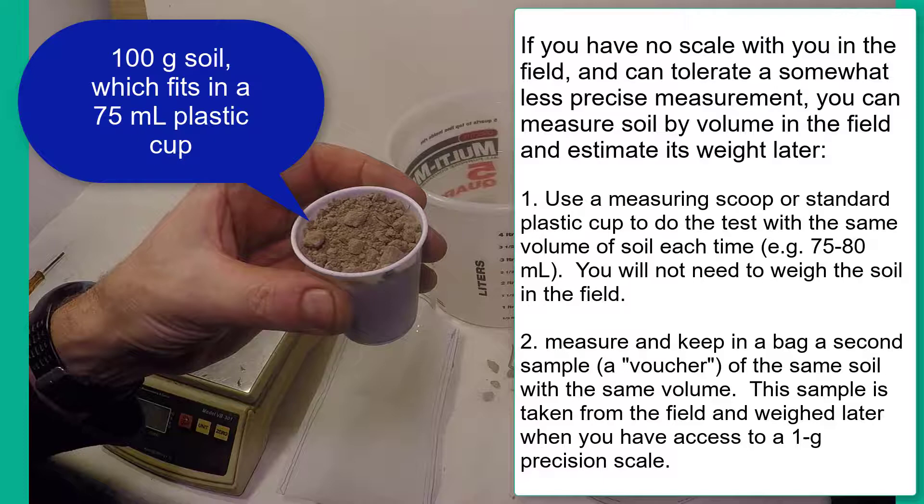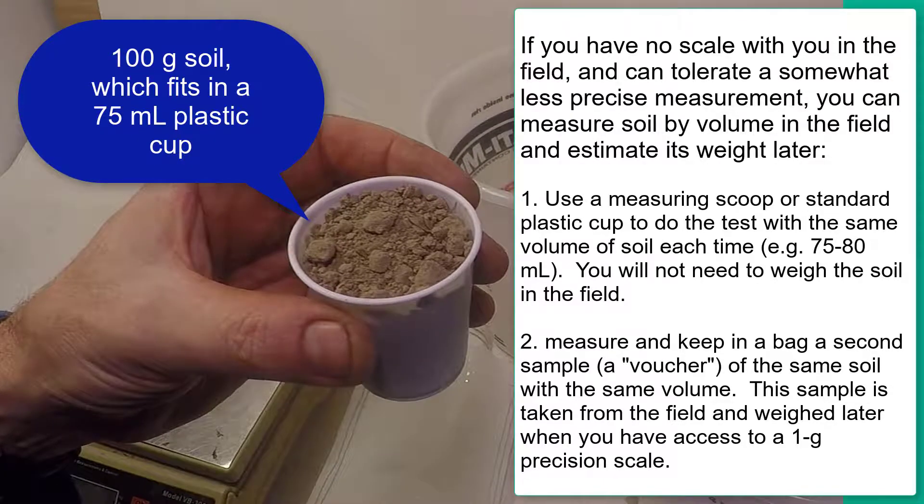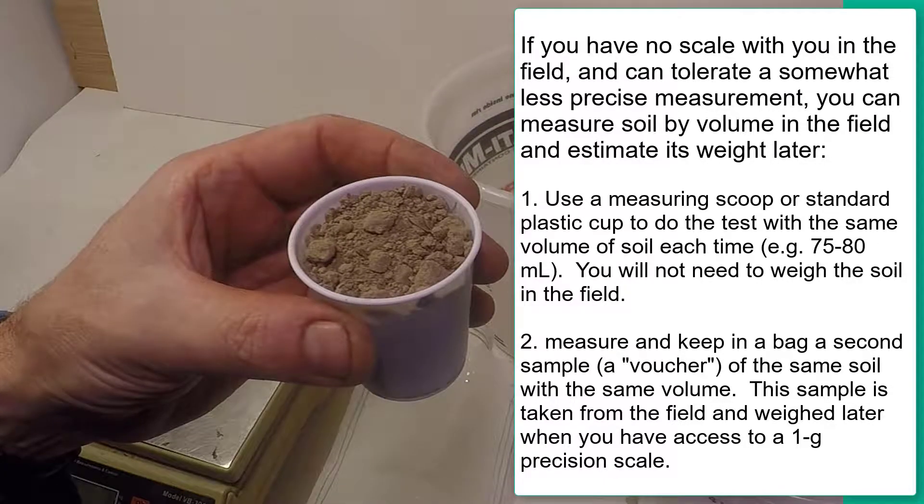Sometimes there is no scale in the field to weigh soil. In this case, you can measure out the soil by volume, and then take the same volume of the same soil in order to weigh it later when you have access to a scale.